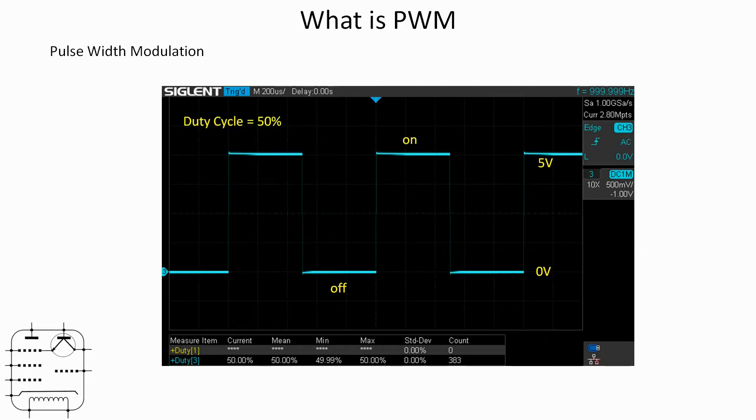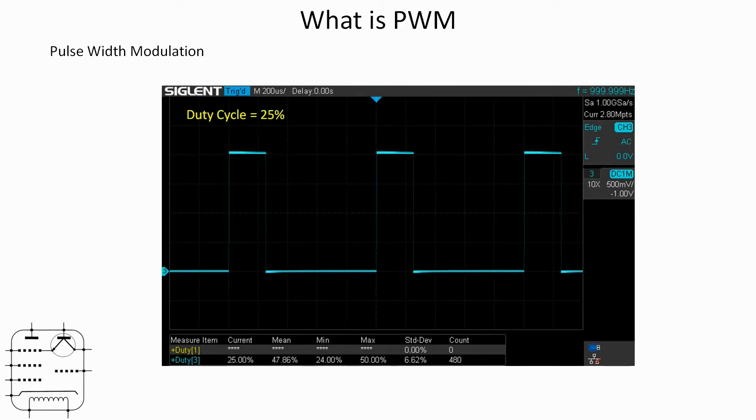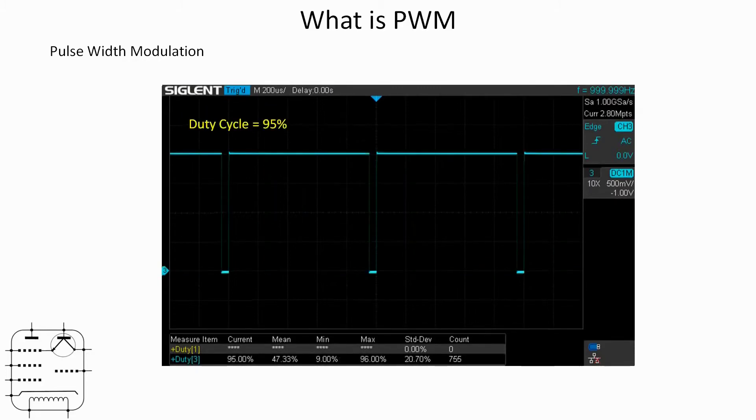So if we shorten the on time of those pulses I've now took it down to 25% duty cycle. Going the opposite way, if we switch it on for 95% of the time you can see there it's almost on all the time but not quite. So that's essentially what pulse width modulation is.